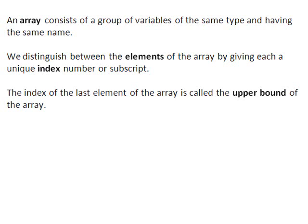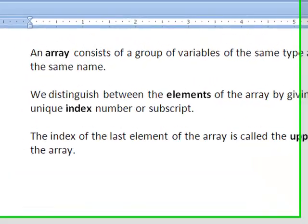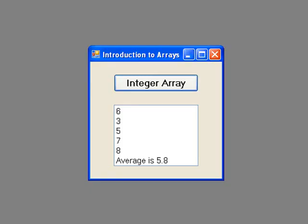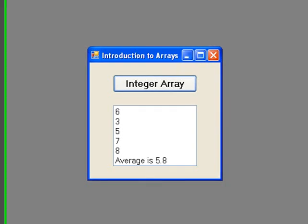In our sample program we use an array called num to hold 5 integer values. We display these values and then calculate and display the average. Although this is a relatively small example of an array, the same principles will apply when dealing with larger examples. On our form we will use a button and a list box. When the button is clicked, the 5 integer values will be displayed as well as their average.